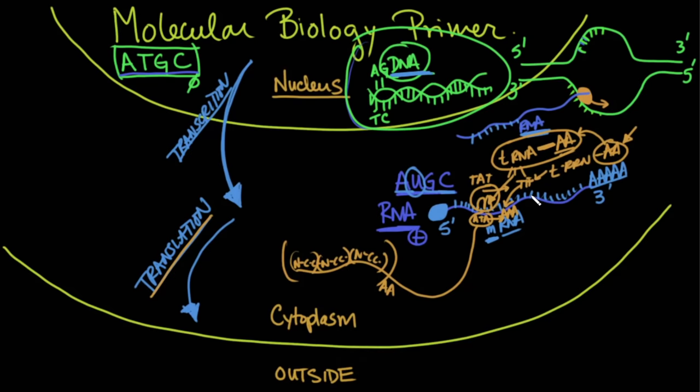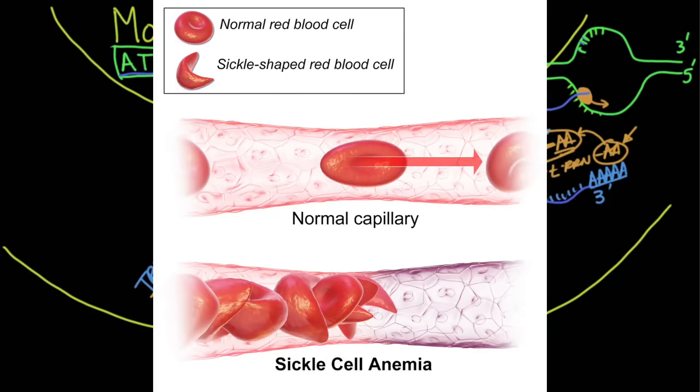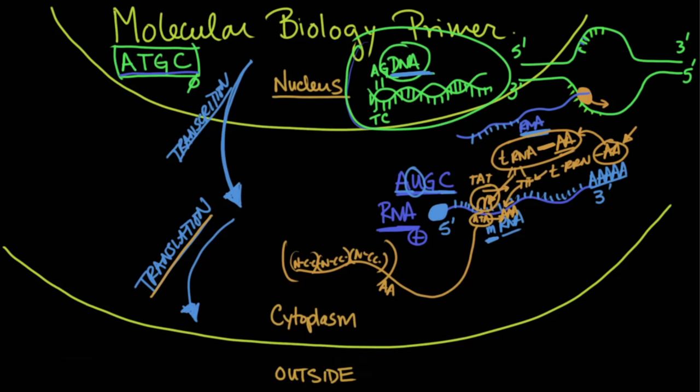If that one amino acid changes, then the whole protein may not work. So this is what happens in sickle cell anemia is when you have a glutamic amino acid getting substituted and changed to a valine amino acid, and that causes sickle cell anemia. It is important that these amino acids be coded for correctly, and that is what happens with transcription and translation.